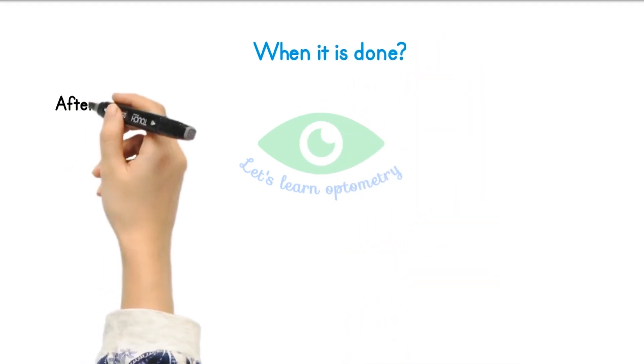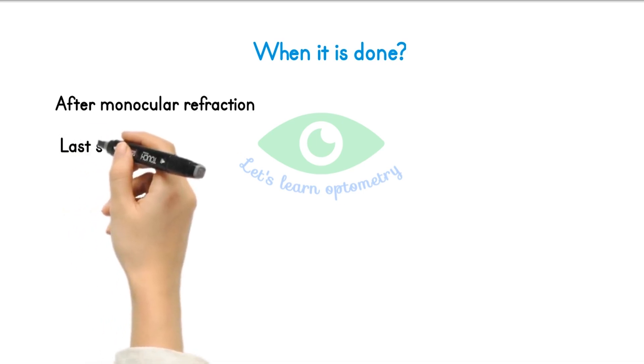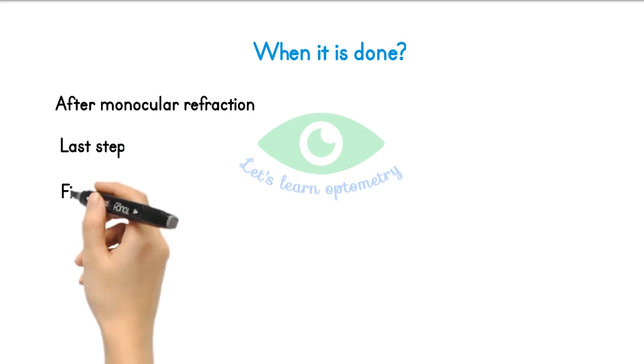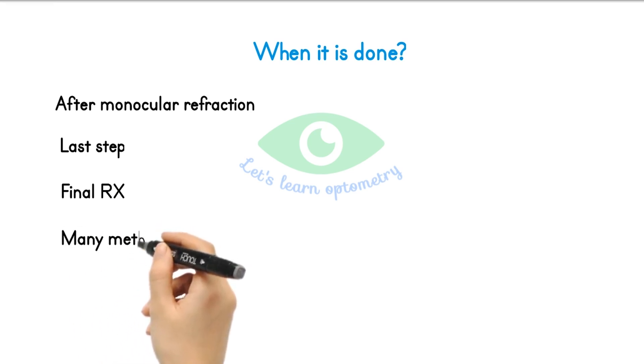Once the monocular subjective refraction has been completed for each eye, it is time for the binocular balancing test. It should be the last step in subjective refraction and the correction you get from this step should be the final Rx. There are few methods to do this test but we will discuss alternate occlusion in this video.